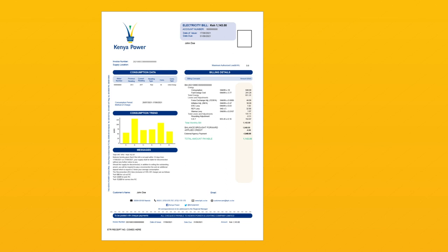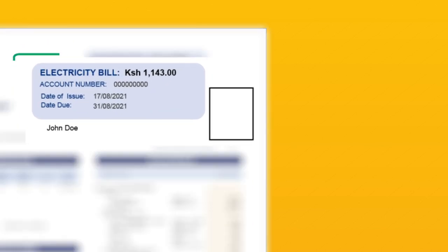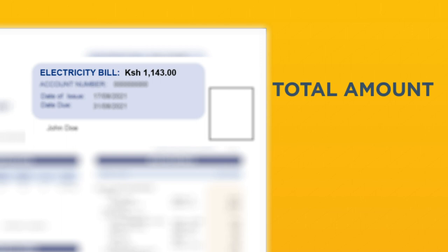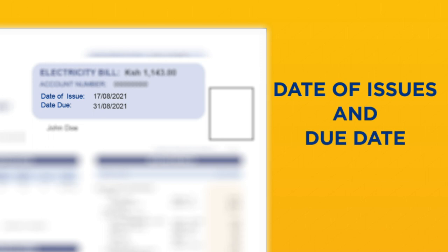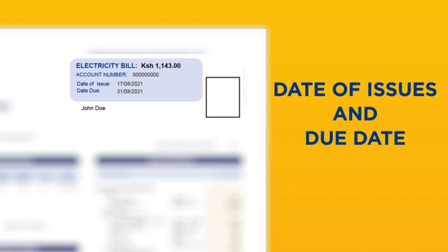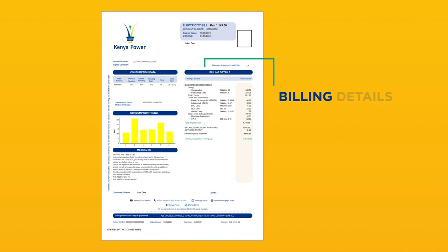Here's how to read your bill. To see how much your bill is, find the total amount listed on this box at the top right of your bill. Also listed in this box is your account number, which you will quote while paying your bill. Underneath is the date of issue and the day your bill is due for payment. Just below that, we have summarized the details of your bill.